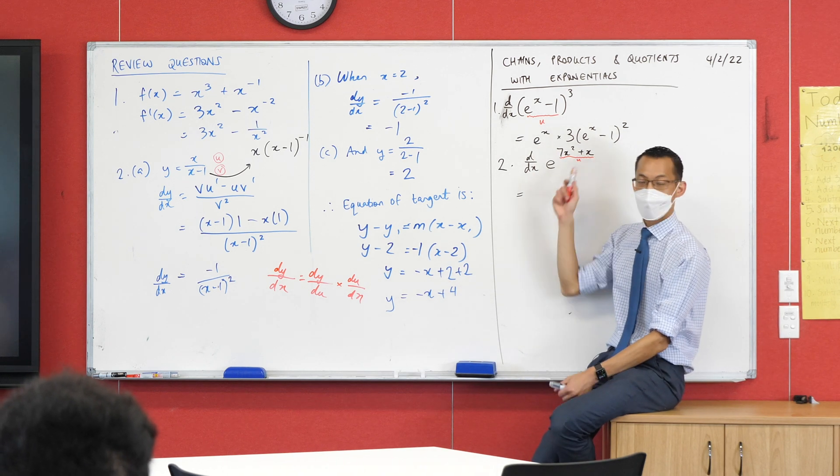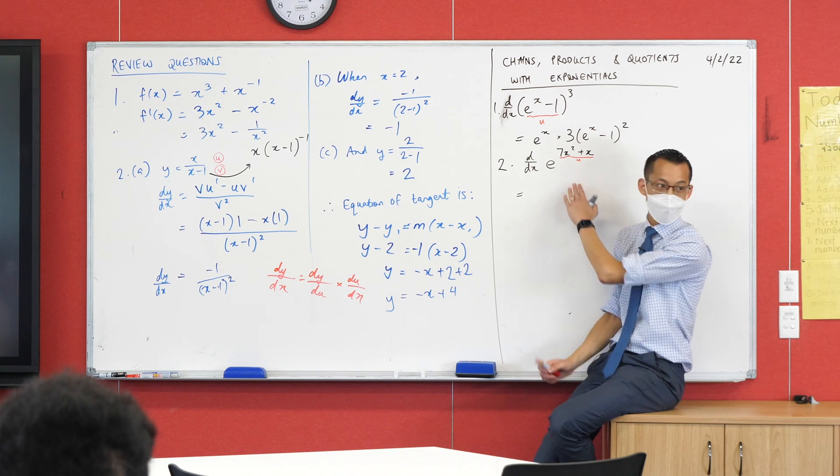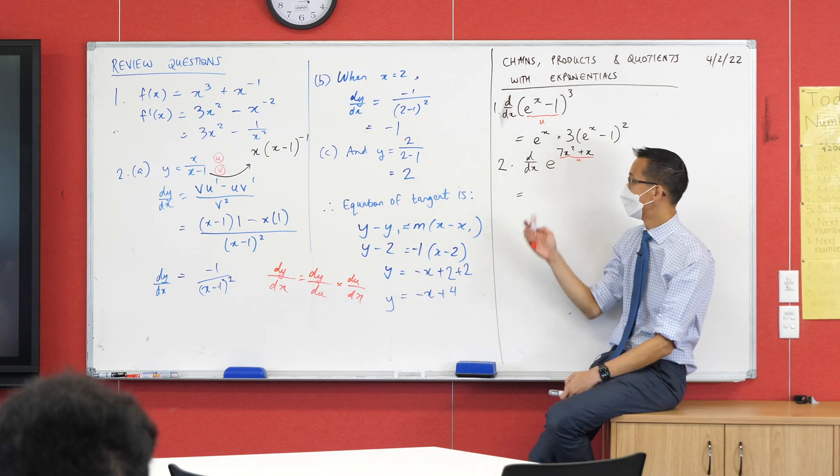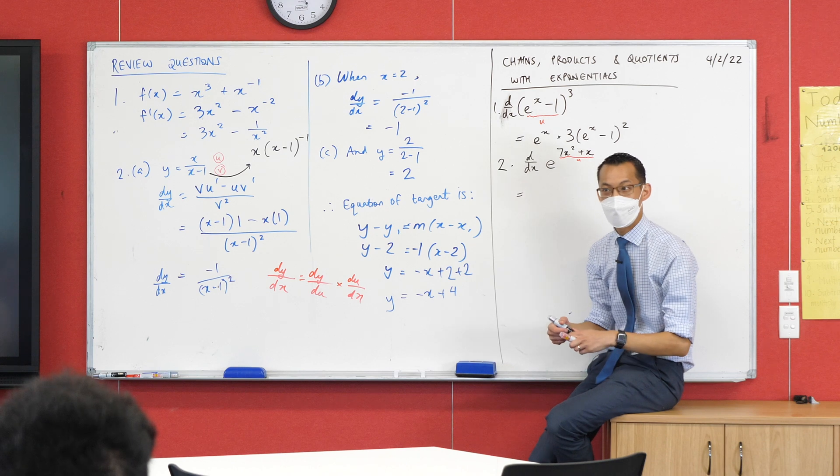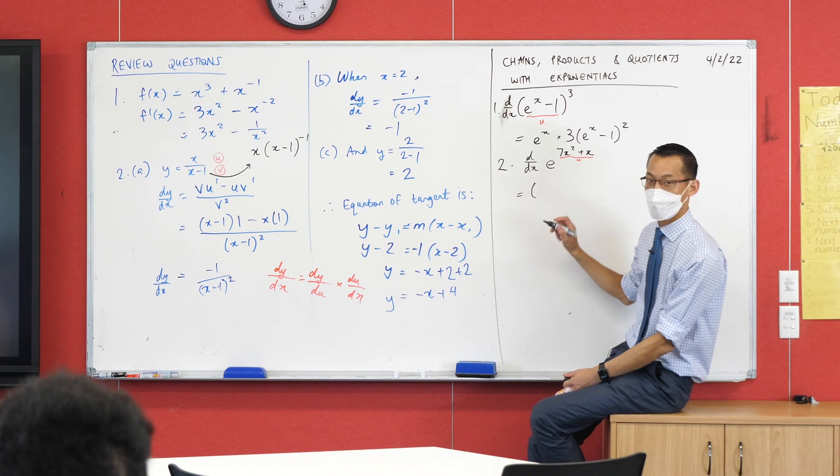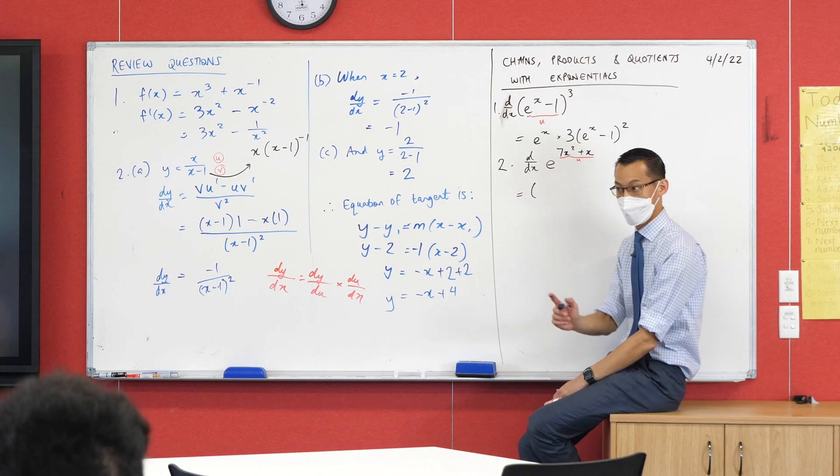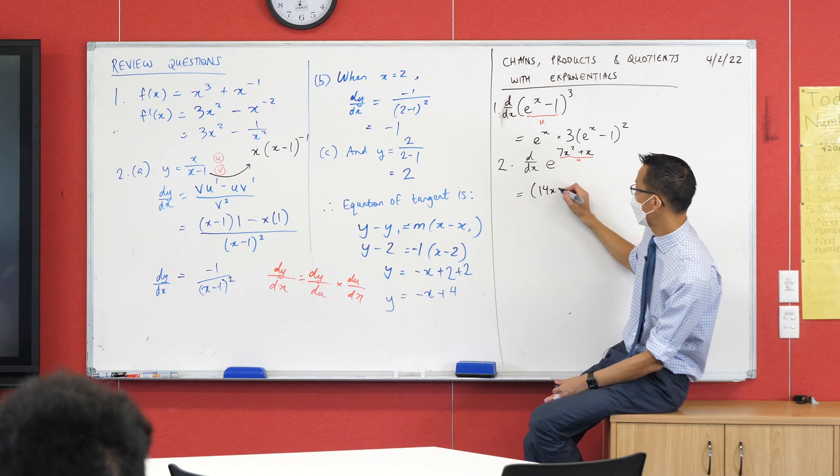And I'm going to do just like I did before. I'll have to differentiate this bit and then differentiate the whole thing. Can we differentiate 7x squared plus x? I think we can. What's the first term going to be? 14x. I've done this before. The x is going to become plus 1.